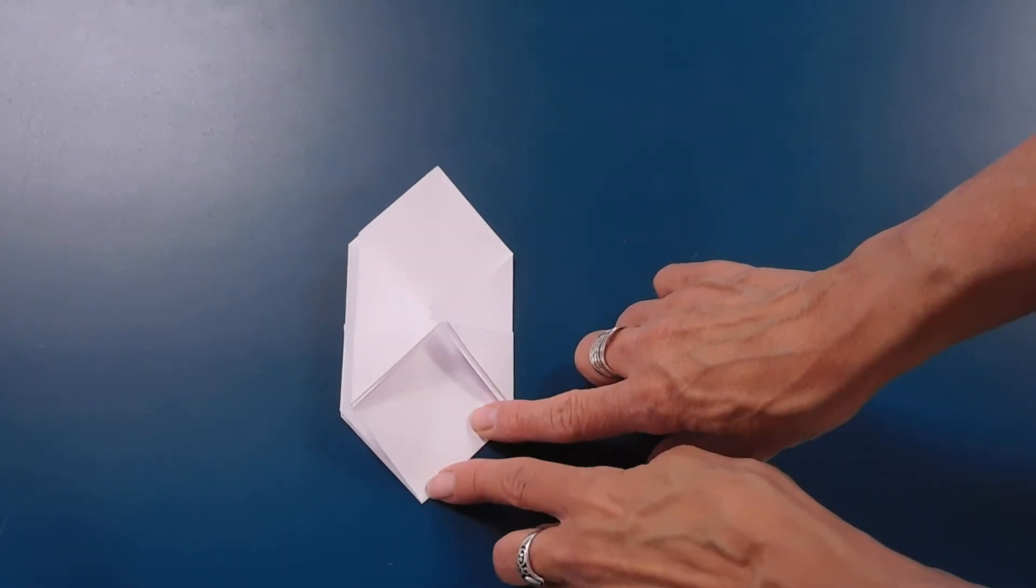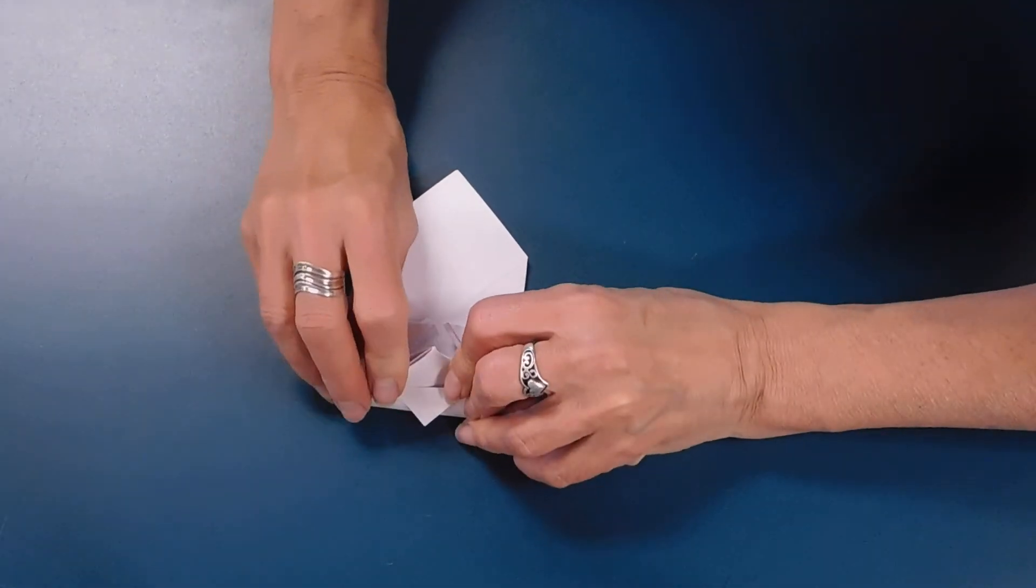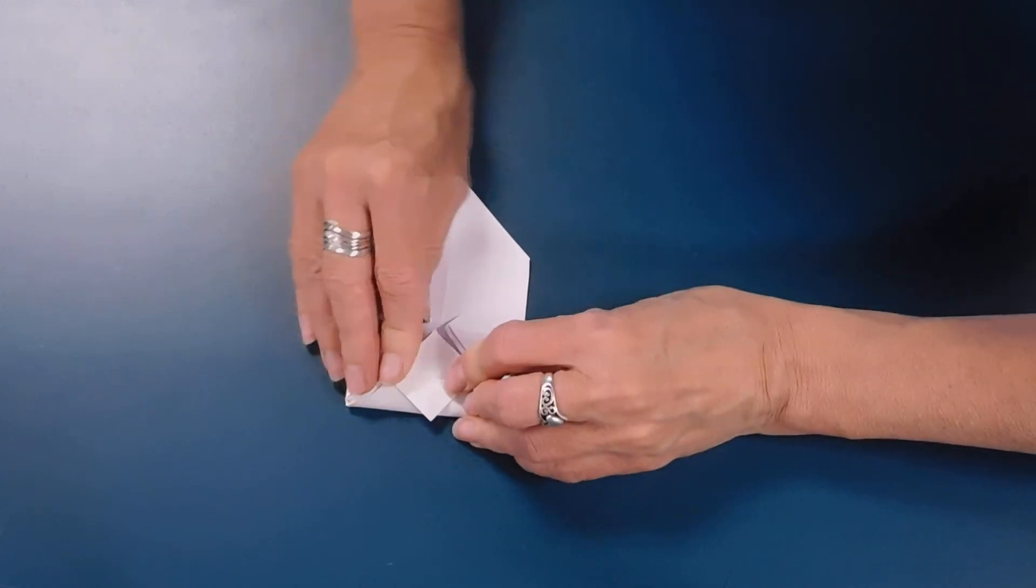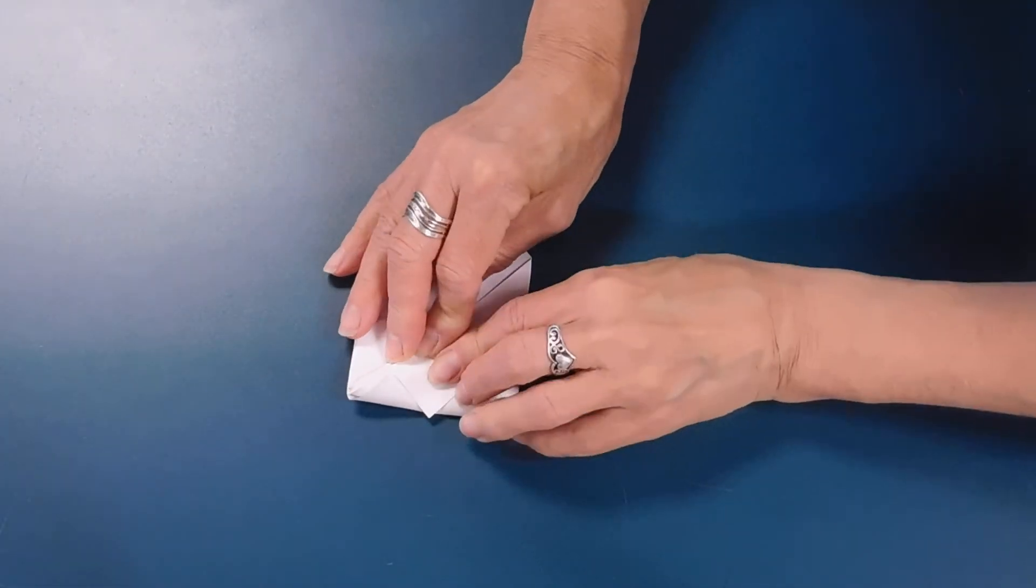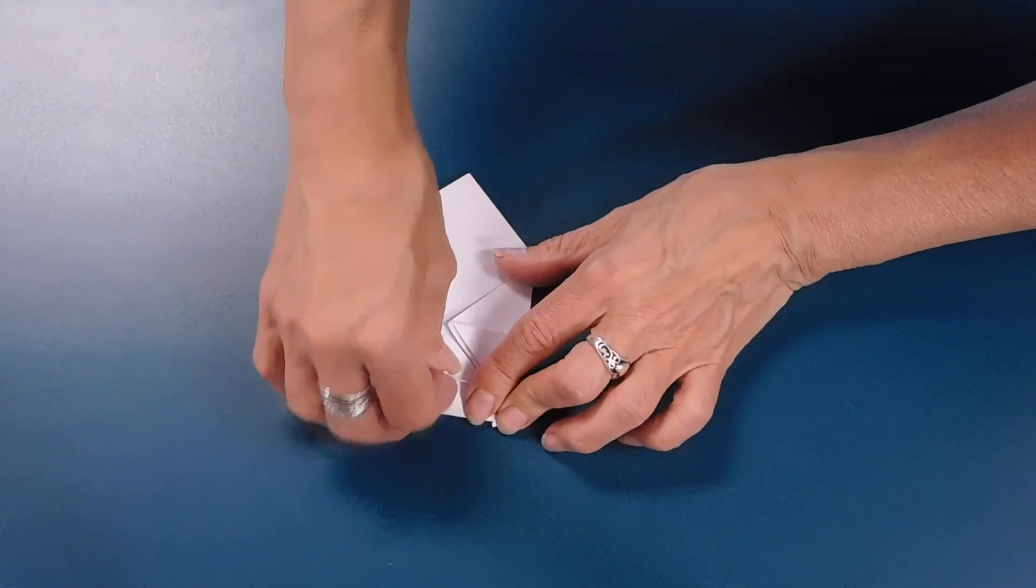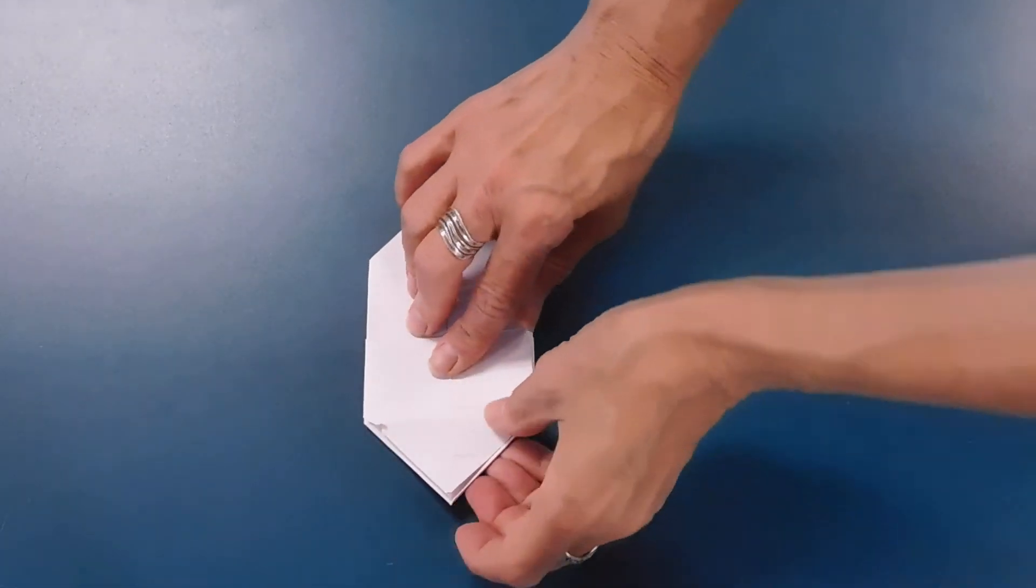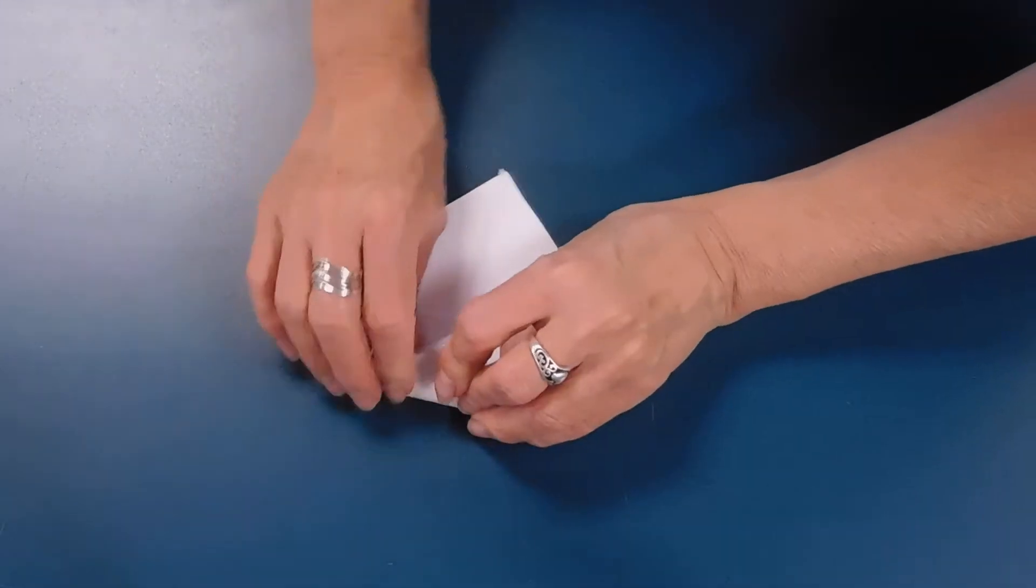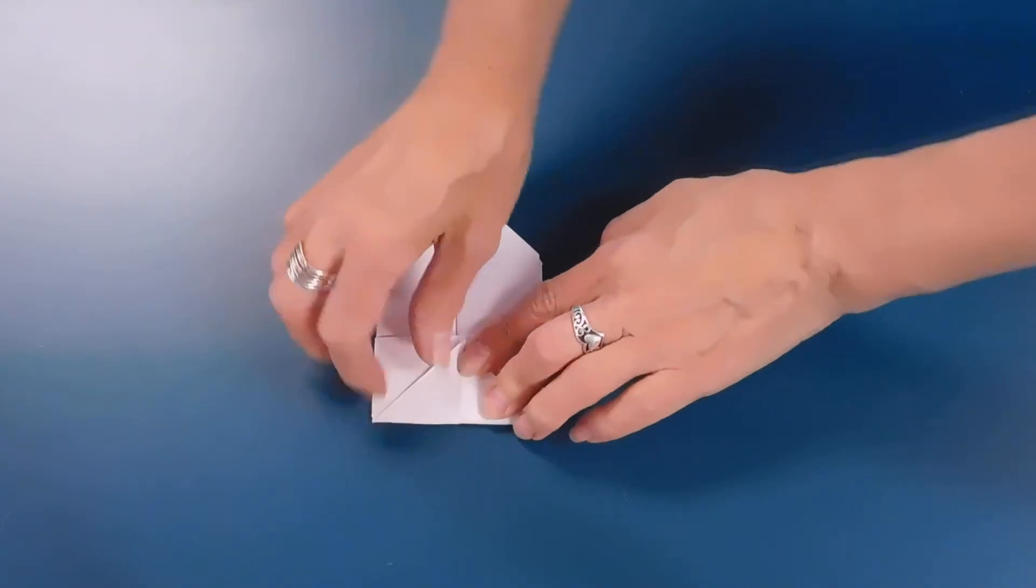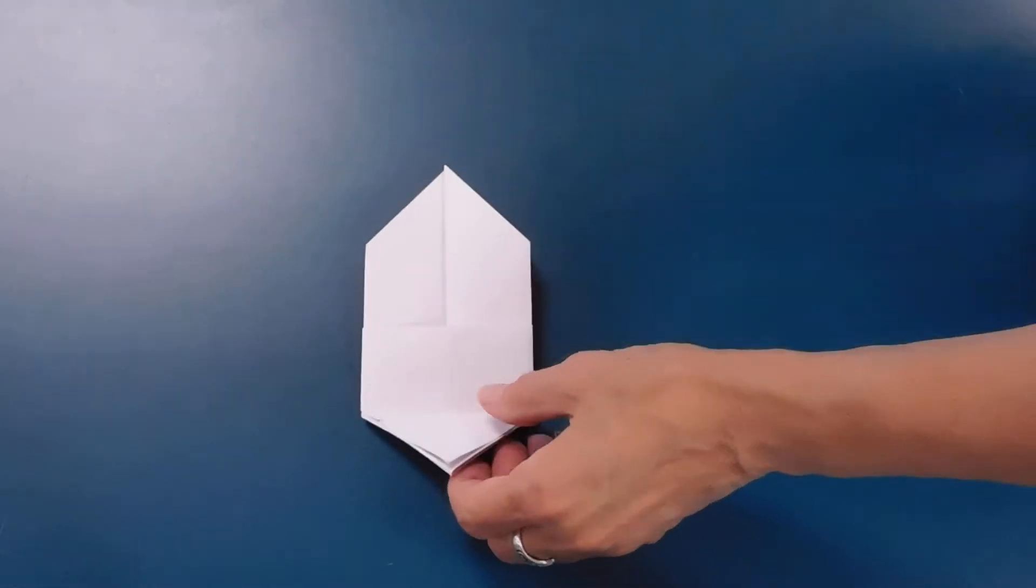We're going to take that lower point and we're going to fold that up to the center. Try to get it straight. Then unfold it, fold it over and refold along that line. And then you can unfold it.